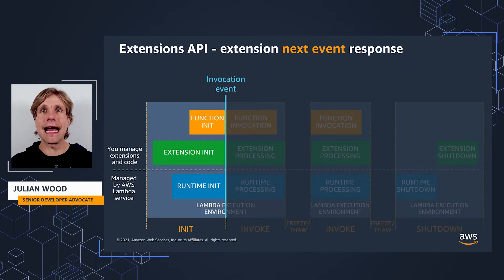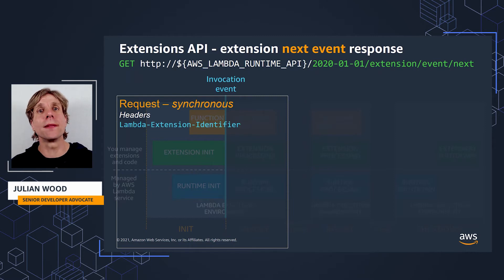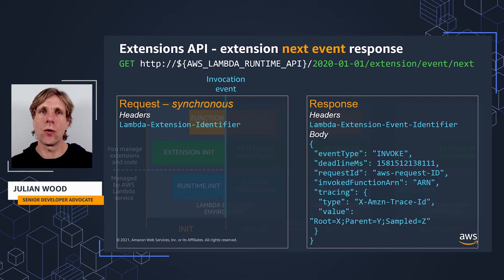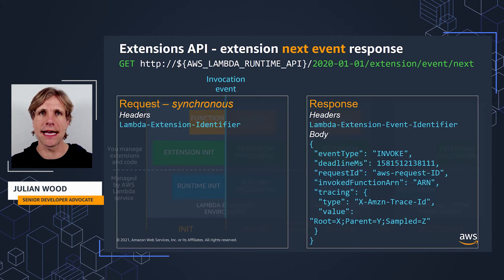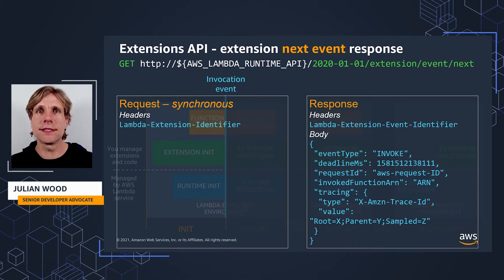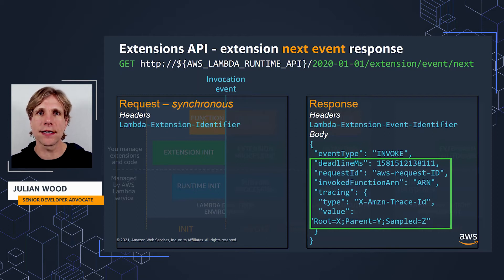In the same way, Lambda responds to the slash next synchronous request from the extension. There's no ordering — Lambda responds to the request from the runtime and the extensions in parallel, and the event is sent to all registered extensions. There is a difference between the response to the runtime and the extension. The runtime receives the entire invocation event which it sends to the function. Each extension receives metadata that describes the event content rather than the actual event payload. This includes the type of the event — in this example, invoke — and then other metadata about the invoke, such as the time that the function times out, the request ID, and tracing headers.